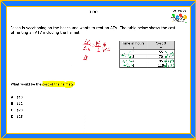I know what you're thinking — in the last interval I did not find the same answer, so maybe something is wrong. Let's check. The change in Y was 30 and the change in X was 2. If I simplify by dividing by 2, what do I get? I get 15 over 1. In both cases I got 15 over 1, so that means Jason is gonna pay $15 for every hour.